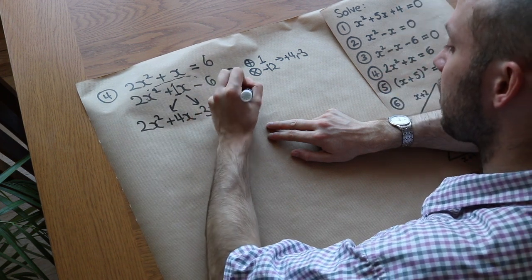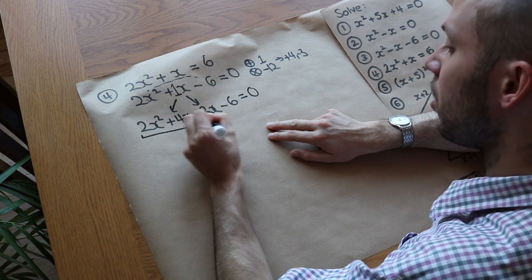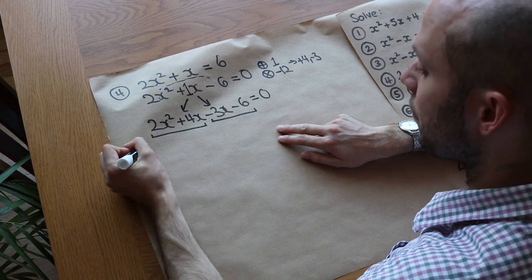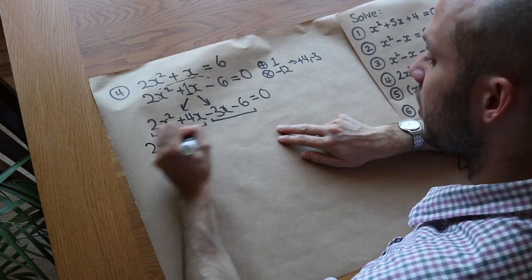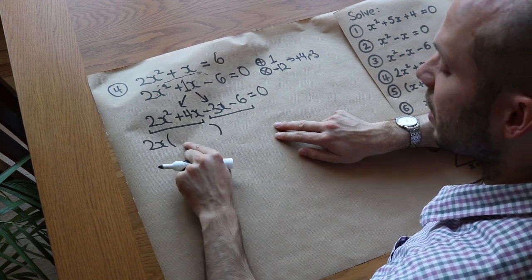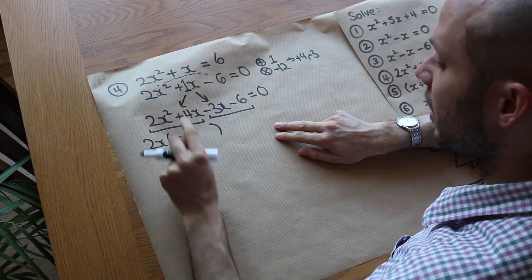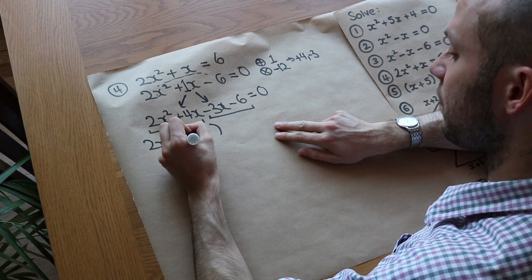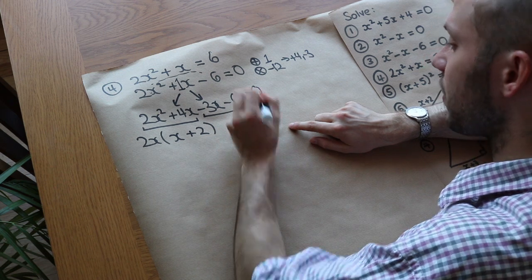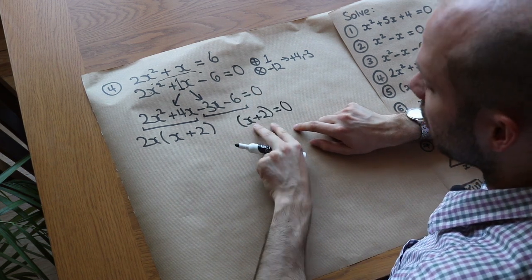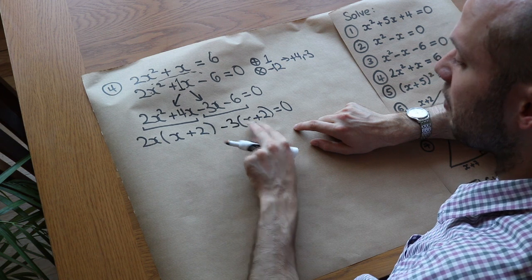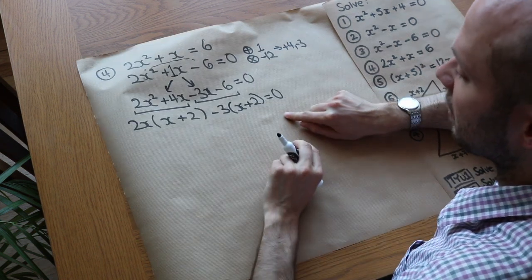We've still got the two x squared and the minus six. Now we factorize each half. Looking at the first half, what's common to two x squared and four x? Well two x is common — make sure you take the biggest thing out. Two x times x gives two x squared, and two x times two gives four x. Then we duplicate that bracket, leaving a gap. What times x plus two gives minus three x minus six? Well it's minus three: minus three times x is minus three x, minus three times two is minus six. That works.